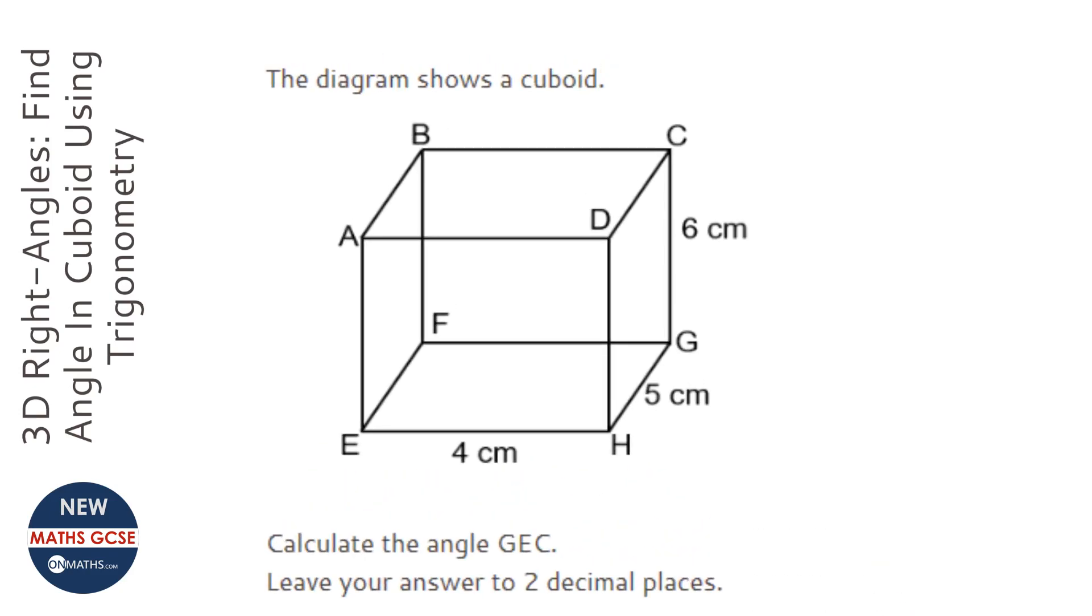Okay, so to answer this question we're going to have to first find the length of this diagonal here. And then when we've got that, the angle GEC is this angle here. So I'm going to call the length X and I'm going to call the angle we're trying to find Y, and I'm going to draw them out first so I've got a better idea of what's going on.